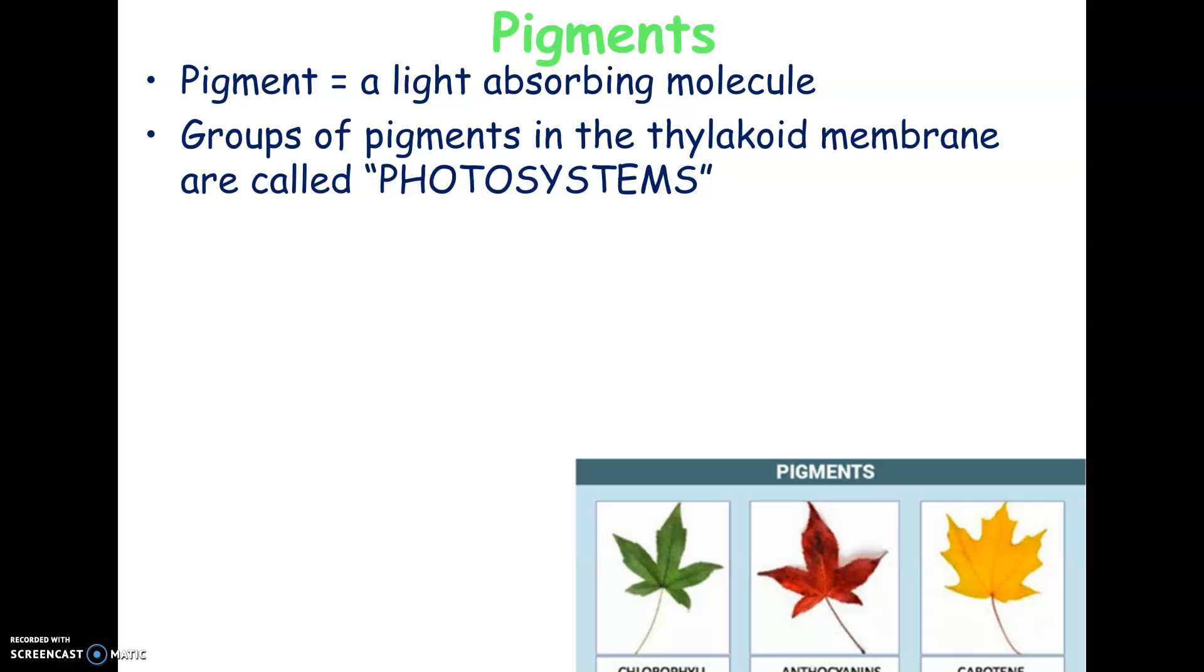So chlorophyll is the main pigment. There are two different chlorophylls, chlorophyll A and chlorophyll B. You don't have to know the difference between them, but they do absorb slightly different wavelengths of light.